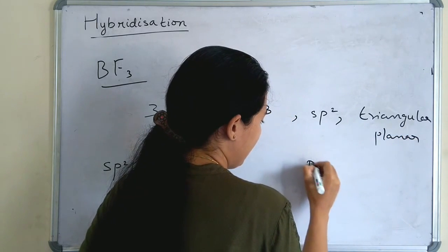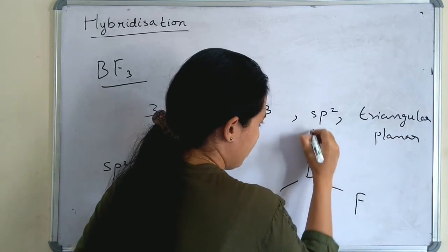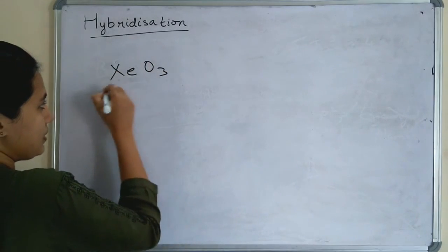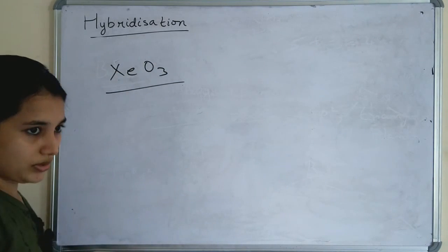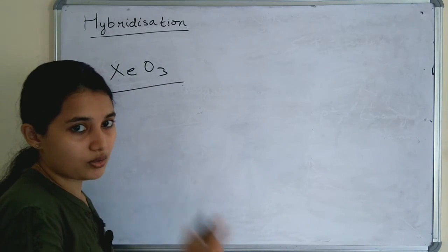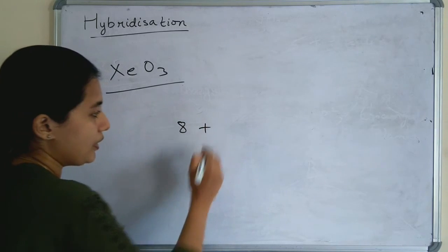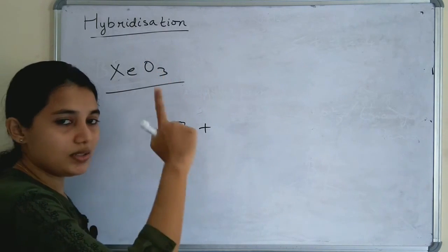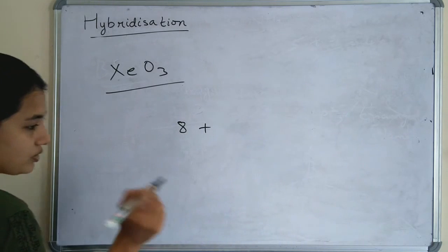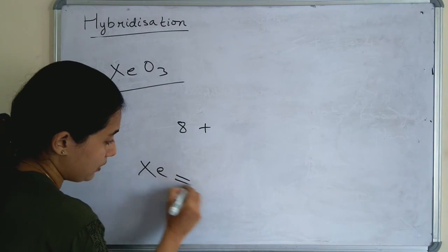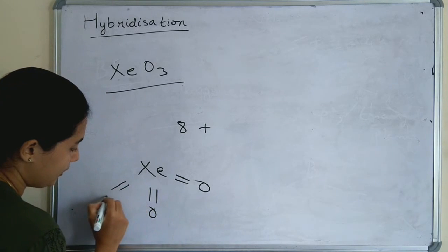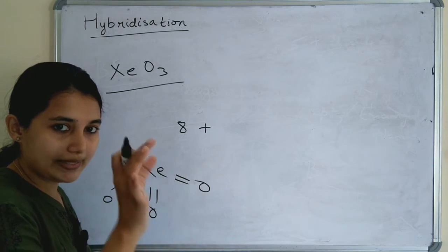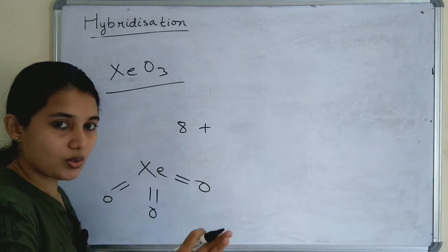So the structure of BF3 is trigonal planar with sp2 hybridization. Now another example: XeO3, xenon trioxide. The central atom is Xe (xenon), and the valence electrons of xenon are 8. In this molecule, the oxygen is double-bonded. For double-bonded ligands, we do not consider the electrons donated by the ligand.